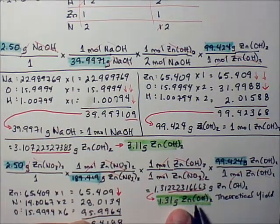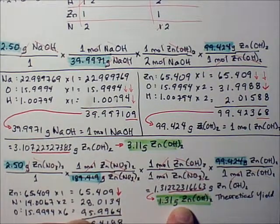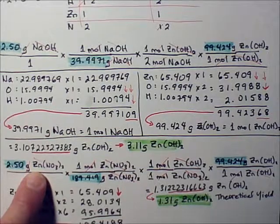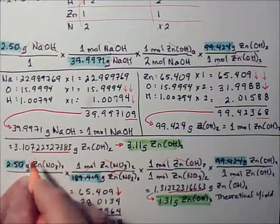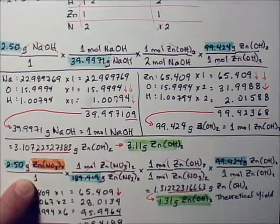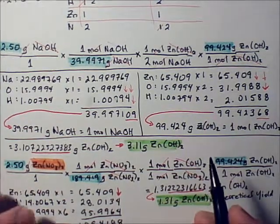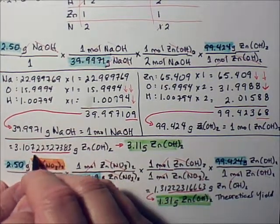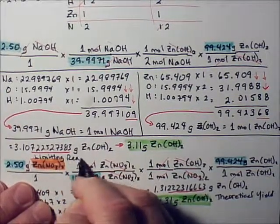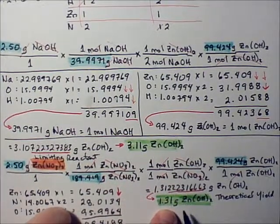And because we have found this to be our theoretical yield, then I can go back to the beginning of this problem and see that zinc nitrate is the limiting reactant. I've identified zinc nitrate as the limiting reactant.